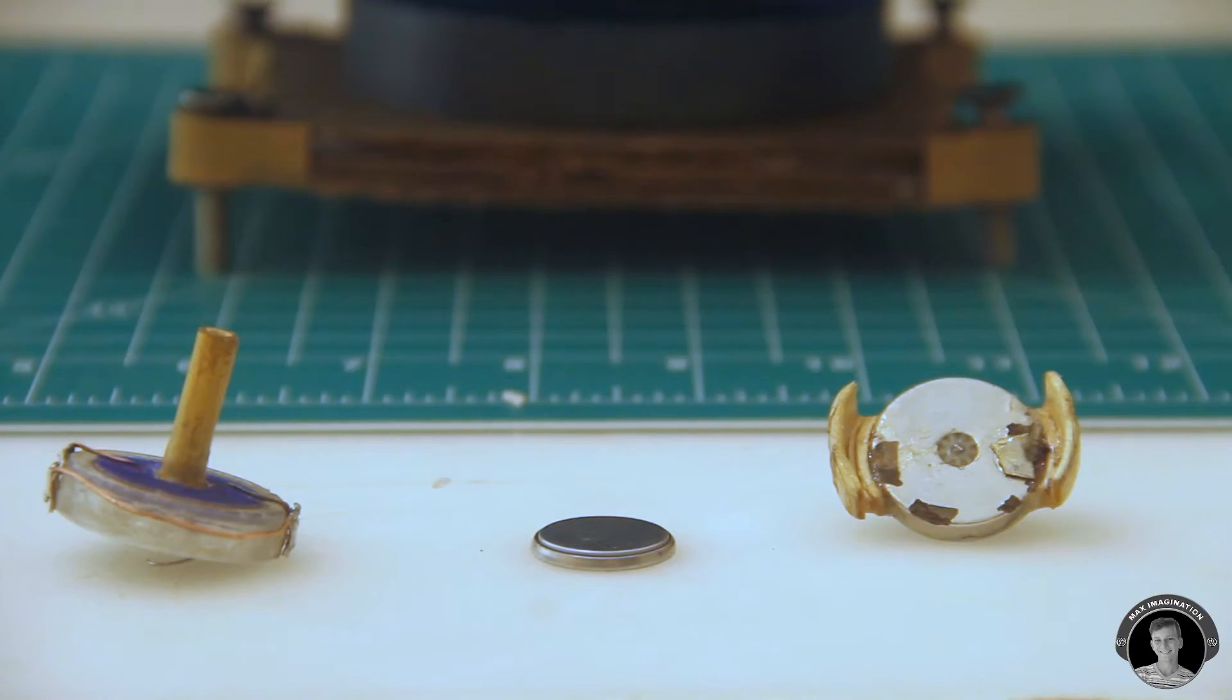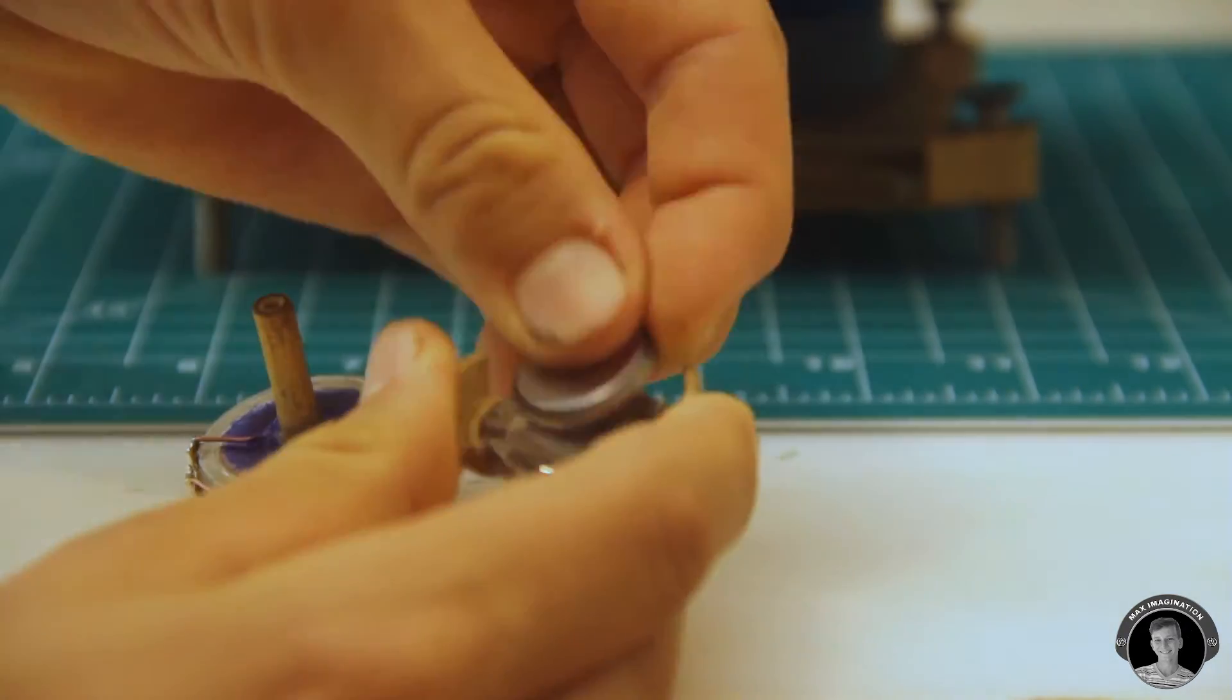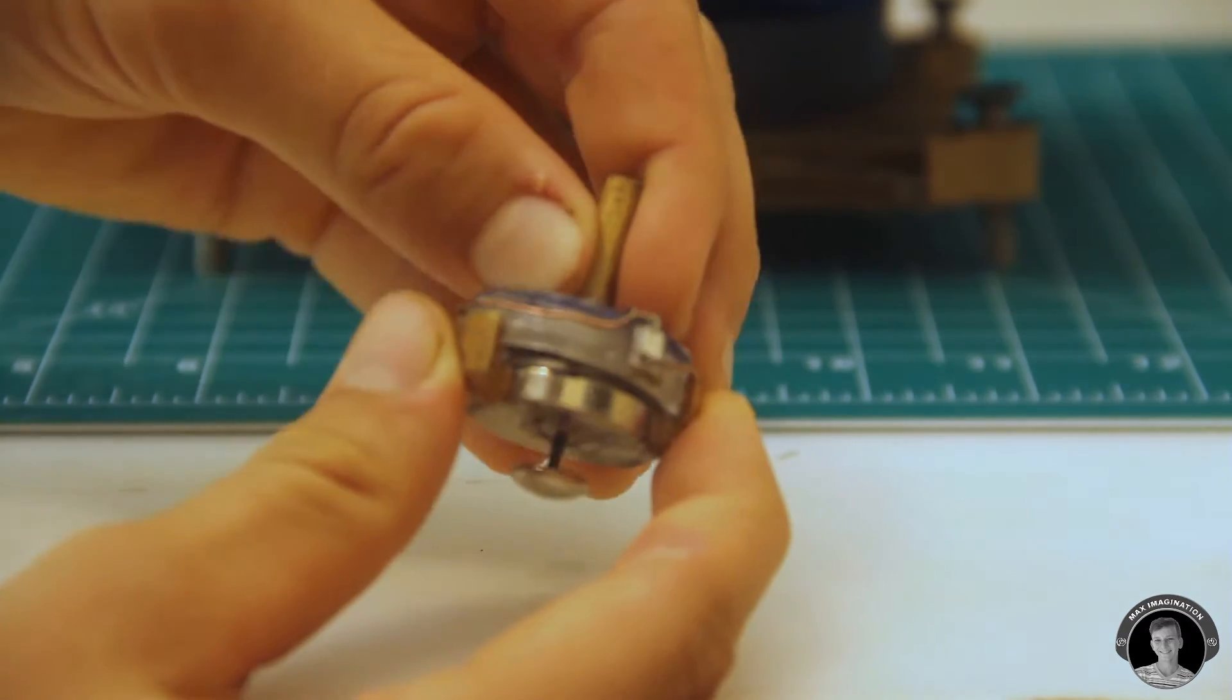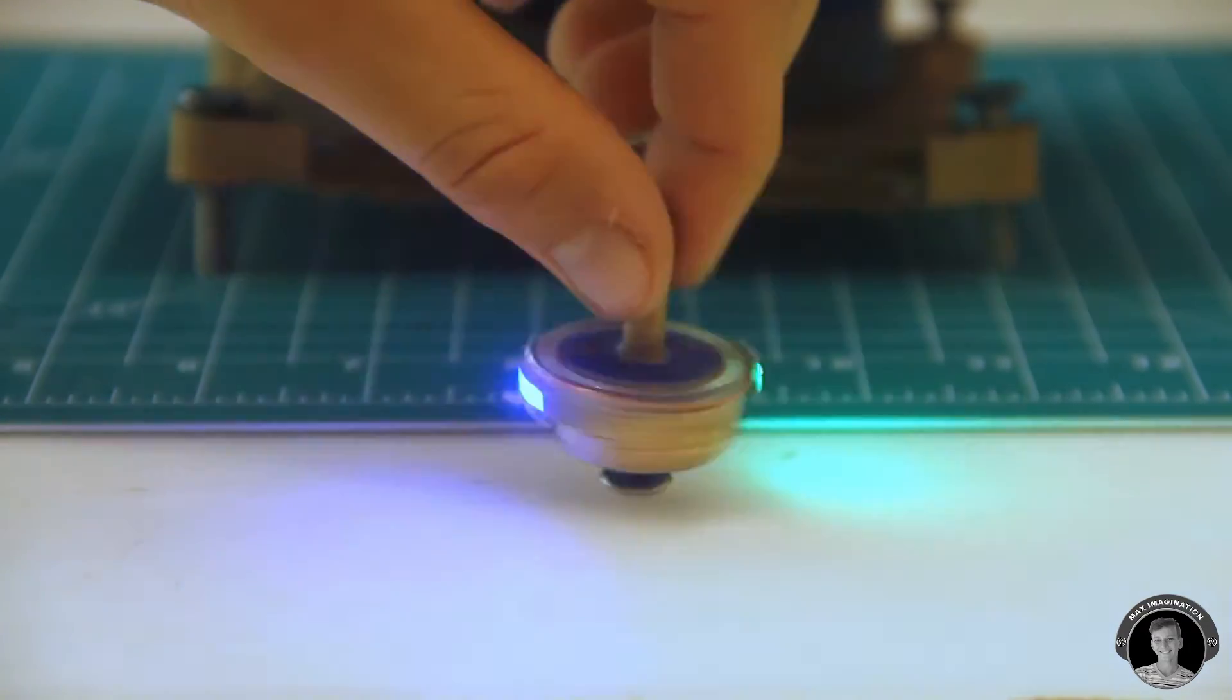Now that we're done with the LED levitating spinning top, we have the top part, the lithium button cell battery, and the bottom part with a magnet and clip. Putting the three together, you can see how cool the levitating spinning top looks when lit up.